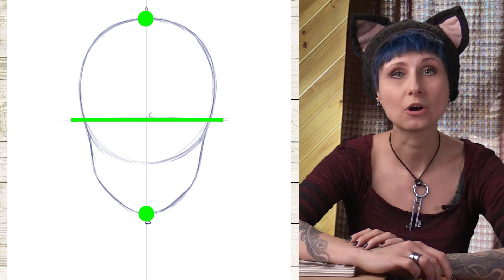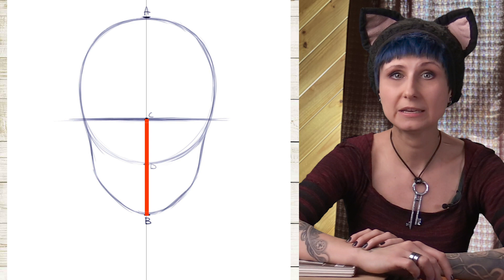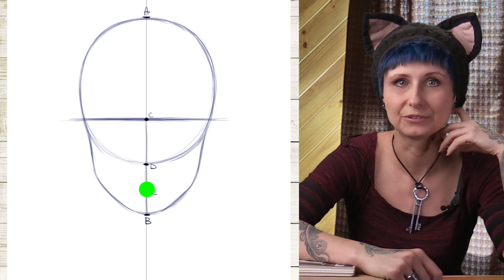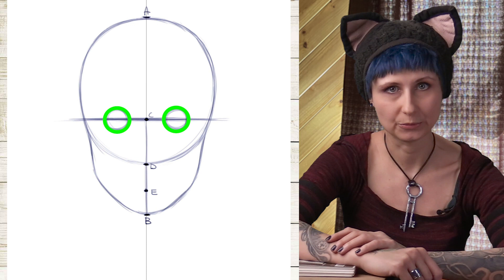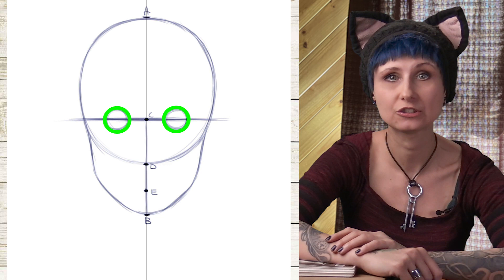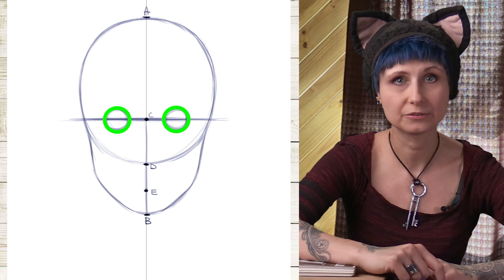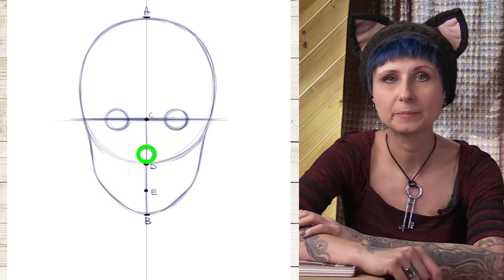Now let's divide the distance between C and B in half — we'll call it point D. How about taking the distance between D and B and cutting that in half as well? I'm just labeling these points for ease of reference. Now I will place two circles on either side of the center point on the center line. Each circle is more or less halfway between the center and the edge of the face — this can vary. These will be our eyeballs. They can be set closer or further apart depending on the kind of face you are drawing, but they must be an equal distance from the center. Now a small circle right over D — this will be our nose tip. And another larger circle between E and B — this will be the chin.